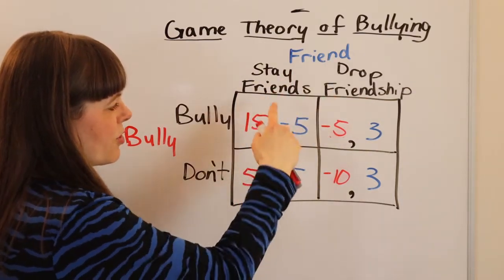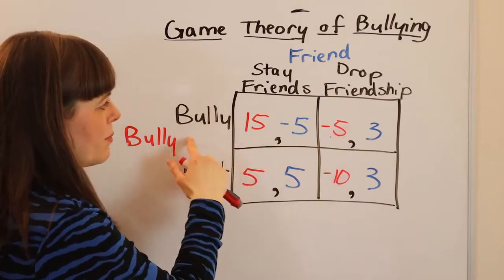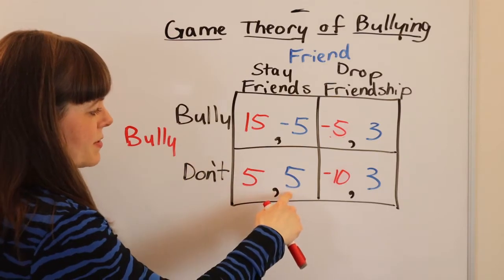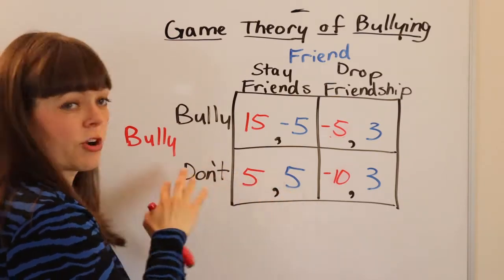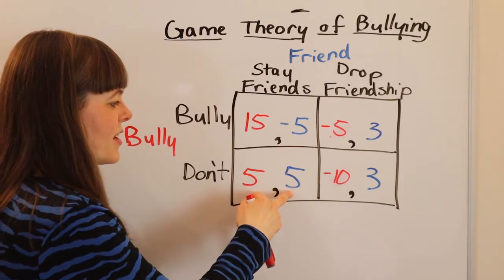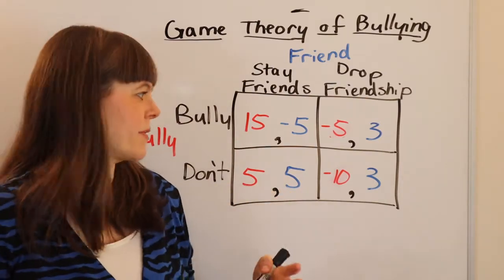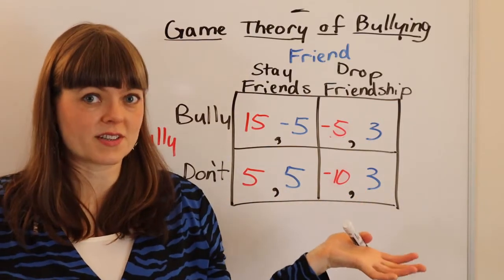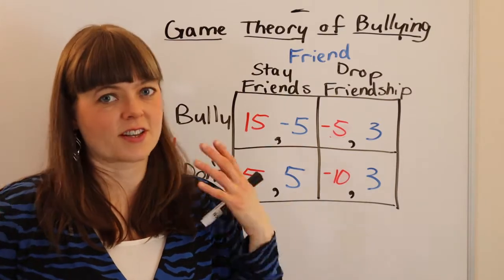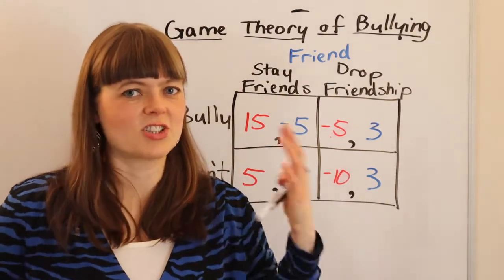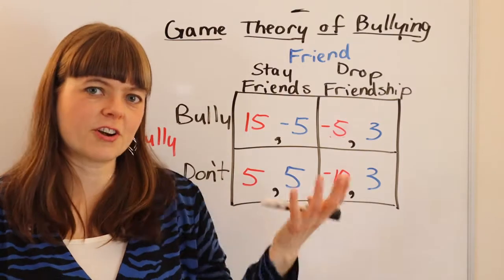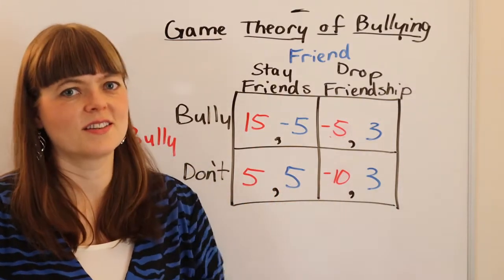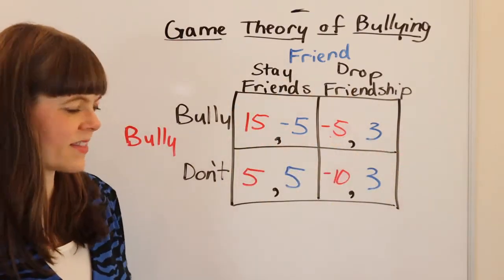The payoffs for the friends are worst when the bully bullies and you don't like to stay friends with them. The best payoff for the friend is the baseline situation where nobody in the group bullies and you get a more long-standing friendship. I put a payoff of three in the box where you drop the bully as a friend — it's still a positive friendship, you just find a new friend group at a convenient time such as a change in school year. But your friend group isn't as long-standing as it would be if nobody was bullying.